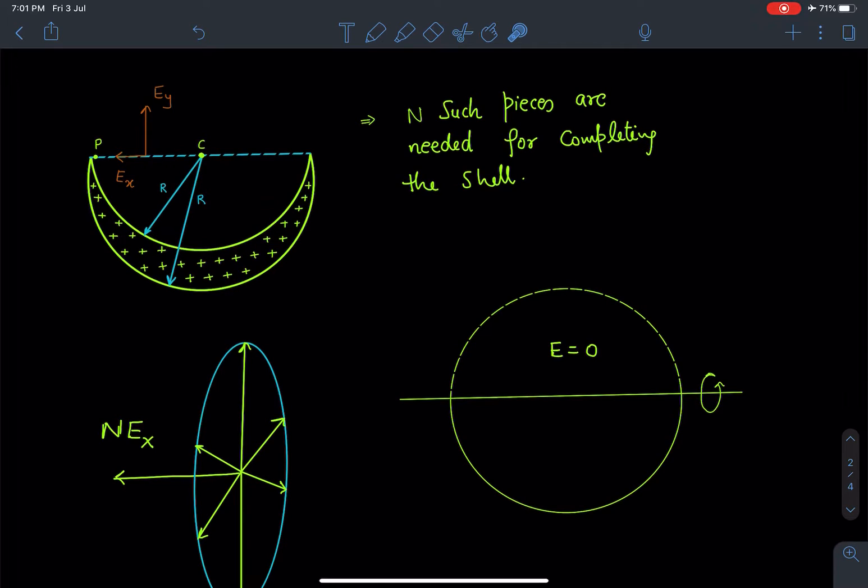Let's say n such pieces are required in order to complete this hollow sphere. If we are adding one by one, we are going to get this type of situation. About this axis we are bringing one piece and then we are adding into the previous one, and one more piece we are adding into the previous one. Like this we are going to complete this entire sphere here. If n such pieces are required for complete sphere, for all these pieces this Ex will be pointing in same direction. So total field at this intermediate point will become n times Ex due to X component of field due to one slice.